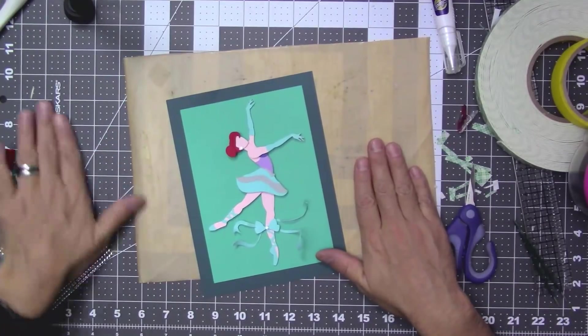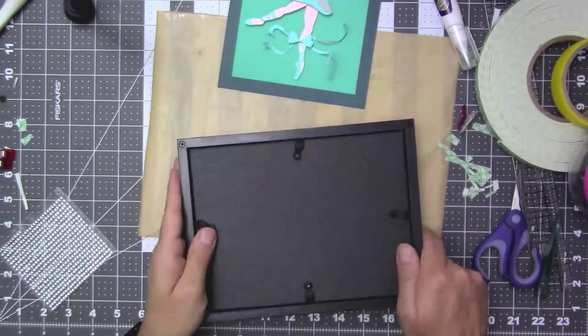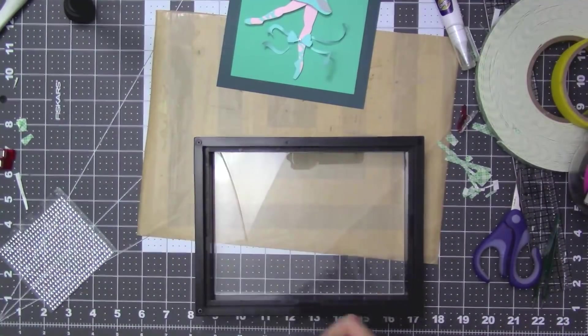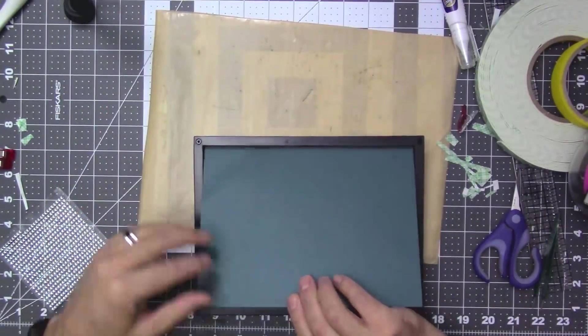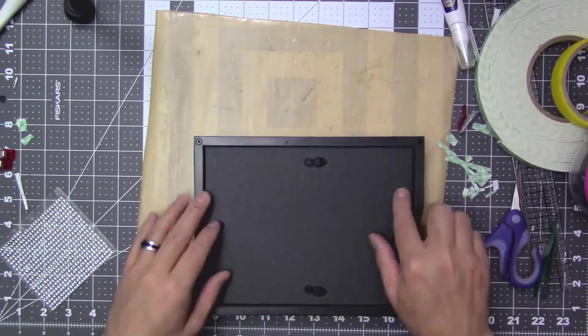And there you go. Finally, take your shadow box frame, put your image in, and you're done.